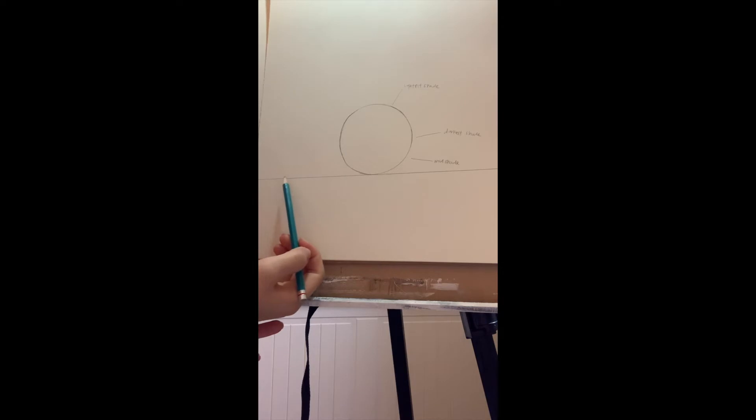We've learned how to draw a horizontal line in our last video. Draw it right below the shape. Okay, there are three key points in shading a perfect sphere. Right here, this part is going to be the lightest shade.